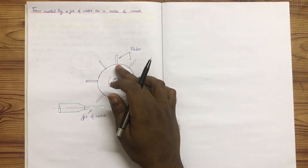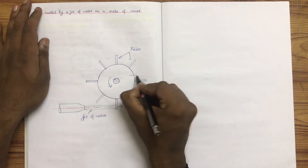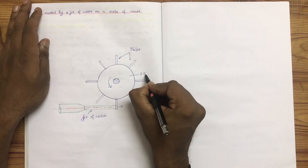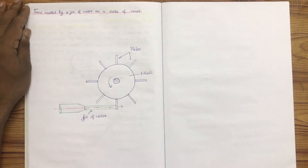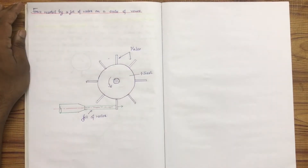This is a rotor, this is a wheel. We can explain the turbine applications. In this series, we have a flat plate.